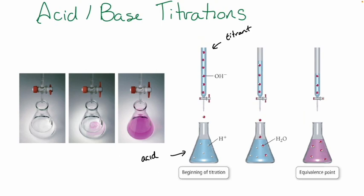Burettes are those long, skinny pieces of glassware with a stopcock at the bottom that you can open and close. So you can release some of that sodium hydroxide out of the burette and into your flask. You released your sodium hydroxide into your flask of acid — you put the base in with the acid — and an acid-base reaction occurred.